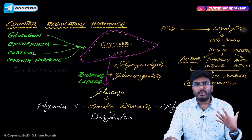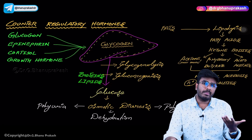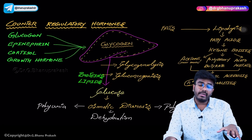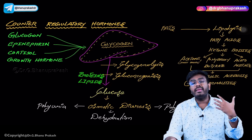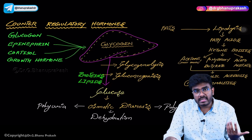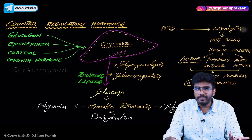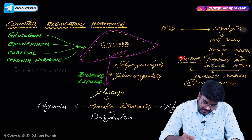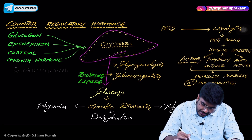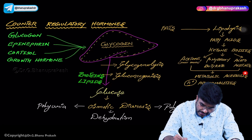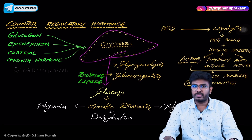Whenever the patient is suffering with acidosis, there are changes in breathing. This diabetic ketoacidosis patient will be breathing heavily — that type of breathing is called Kussmaul's breathing. Acetone, beta-hydroxybutyrate, and acetoacetate are the ones responsible for the metabolic acidosis in the patient.